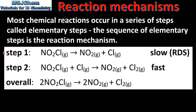Here we have a proposed reaction mechanism that occurs in two elementary steps. At the bottom we have the overall equation for the reaction. The overall equation can be deduced from the elementary steps. If we look at the elementary steps we can see that the chlorine atom appears on both sides of the arrow in step 1 and step 2. Any species which appears on both sides of the arrow in the elementary steps can be cancelled out and doesn't appear in the overall equation.